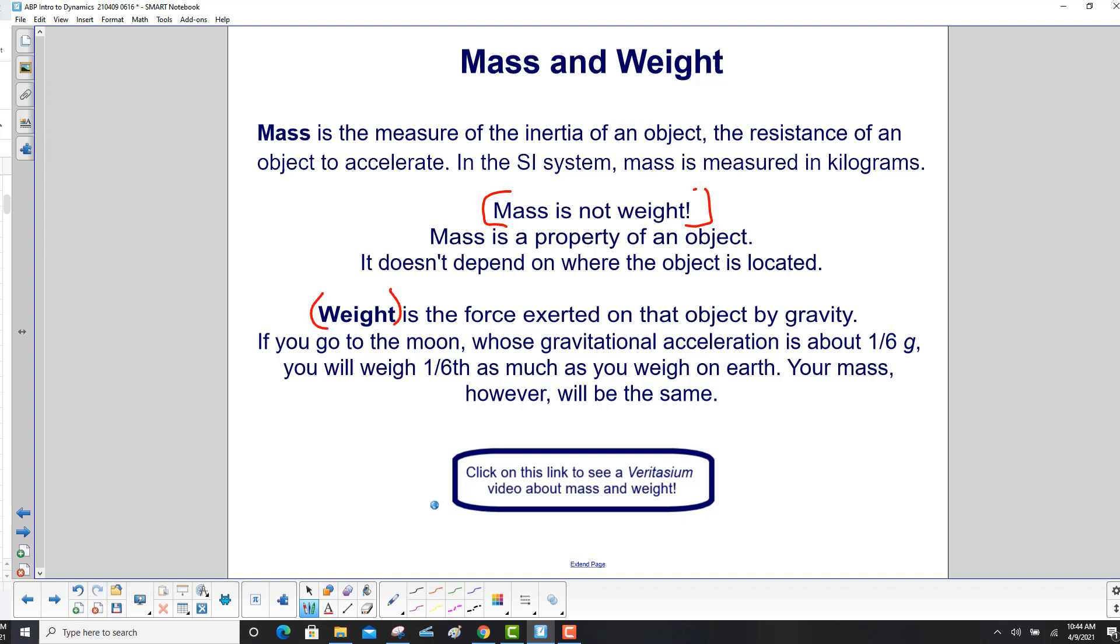Weight is the force exerted on that object by gravity. If you go to the Moon, whose gravitational acceleration is about one-sixth of g, you will weigh one-sixth as much as you weigh on Earth. Your mass, however, will be the same.